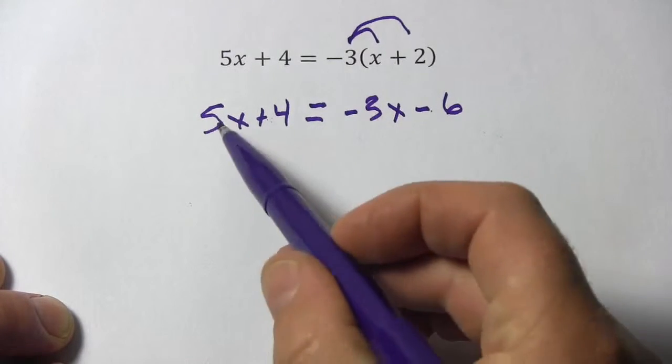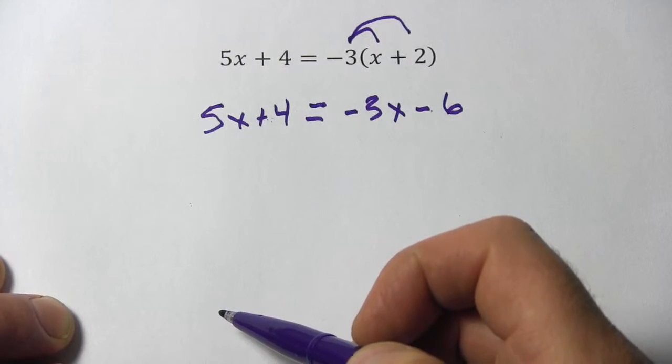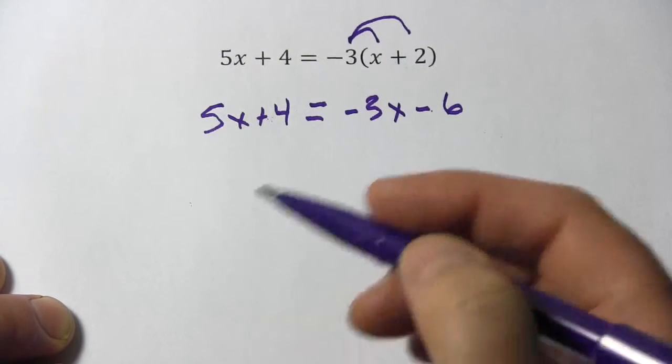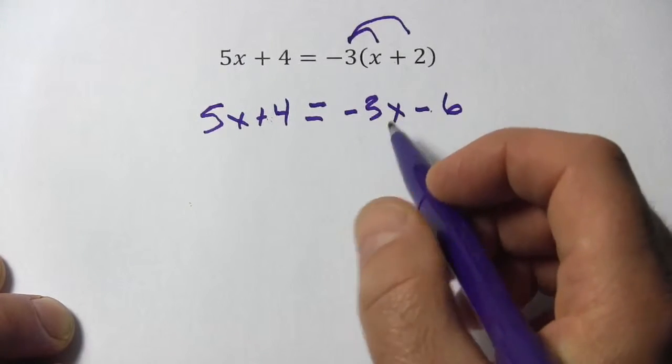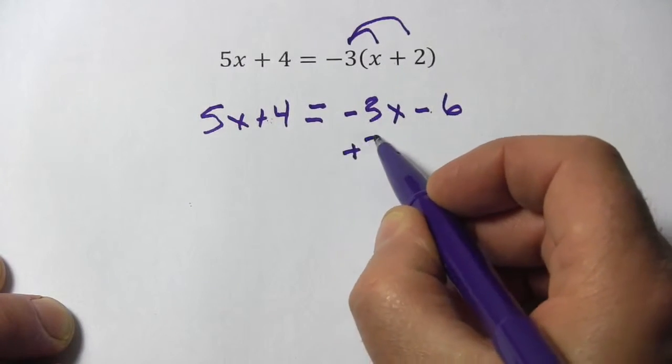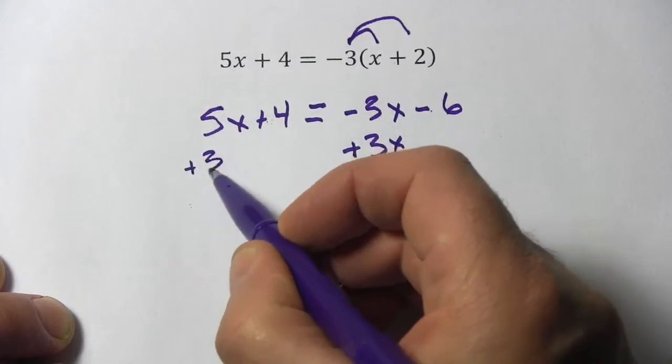Now I've got x terms on both sides of the equation. I need to get rid of one of them so that x is on one side. I'm going to get rid of this negative 3x because I don't like negative numbers. I'm going to do that by adding 3x to both sides of the equation.